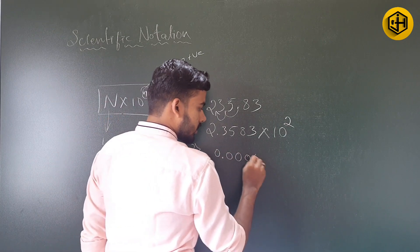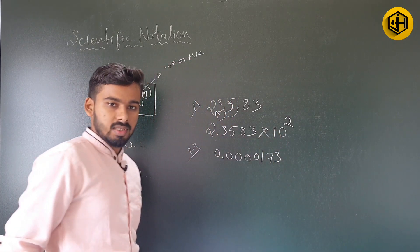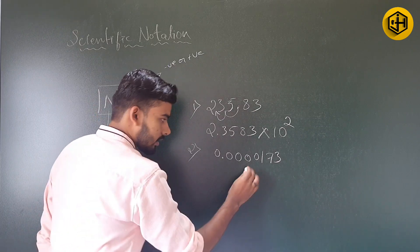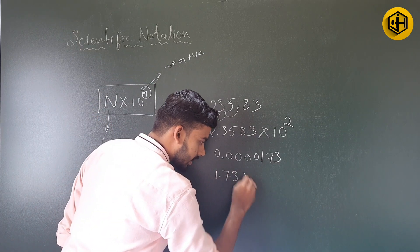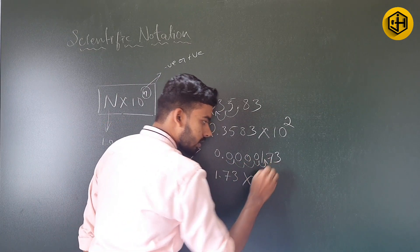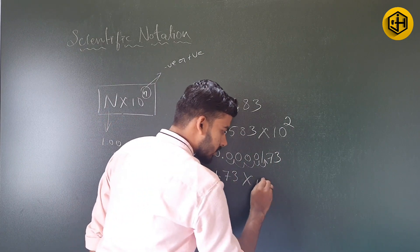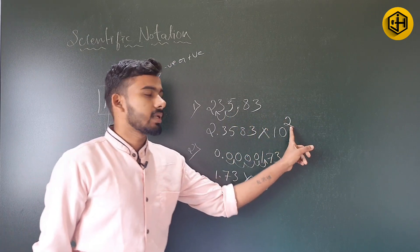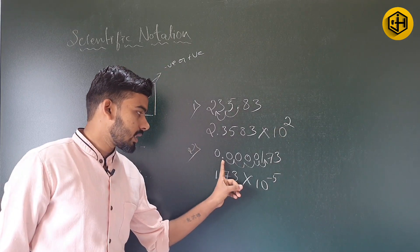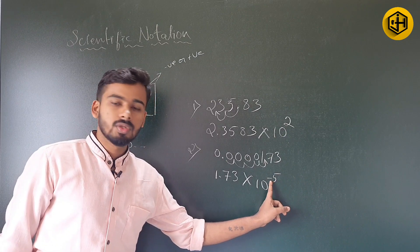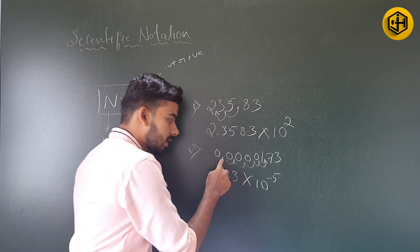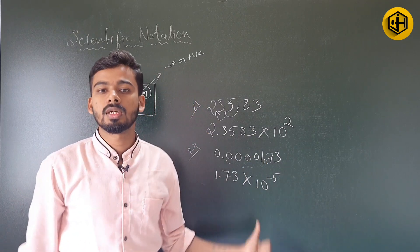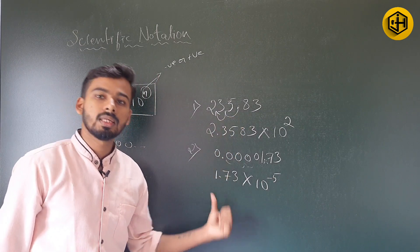Now consider 0.000173. If we express this quantity in scientific notation: we get 1.73, and the decimal point has moved 5 places to the right side, so it becomes 1.73 × 10^−5. Since the decimal point has moved to the left in the previous example, we used a positive exponent. Here, since the decimal point has moved to the right side, we use a negative symbol: 10^−5.